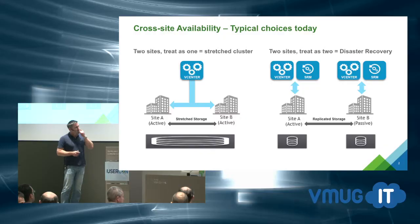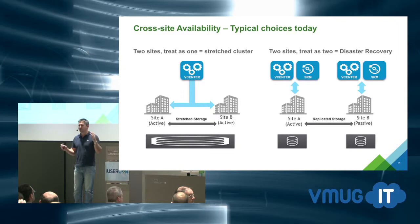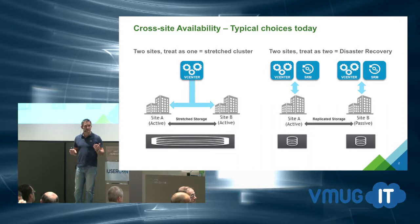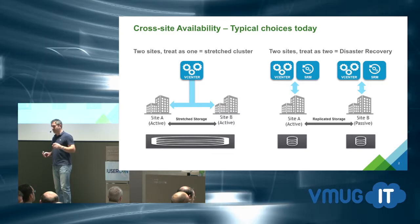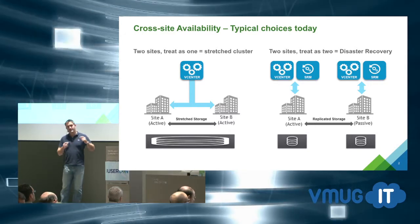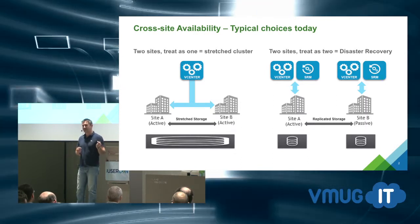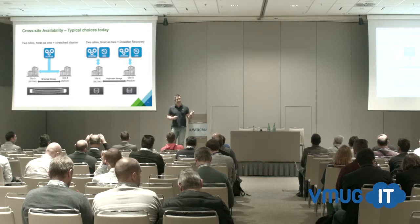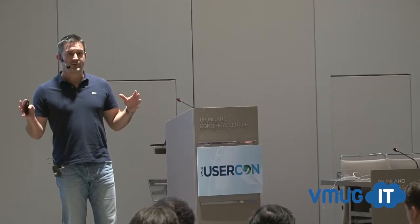Typically there are two options in terms of how vSphere sees things. On the left we have two sites relatively close together — metro distance, typically up to about 150 kilometers. We do have a customer in Germany that managed to do a synchronous stretch over 350 kilometers with 3.7 milliseconds round trip time, which is the longest I've ever seen at achievable latency.